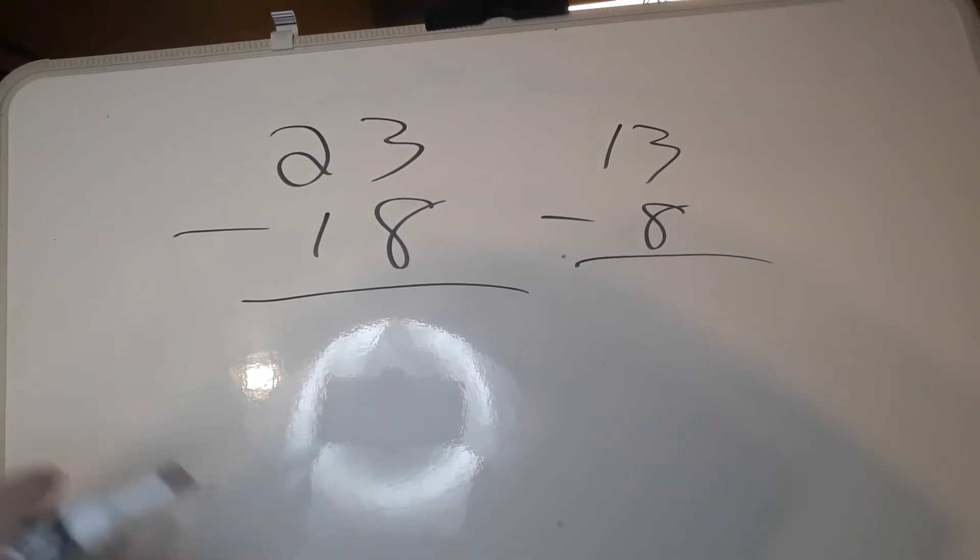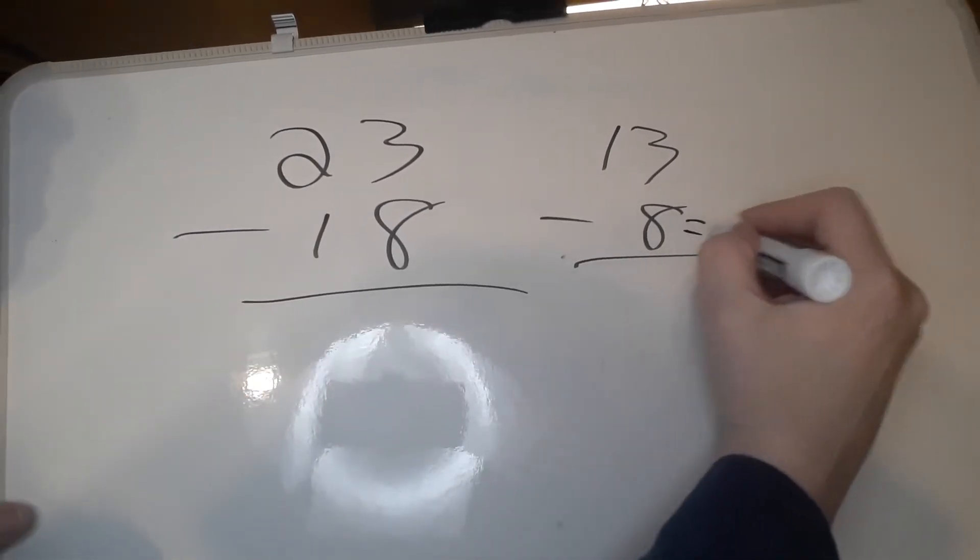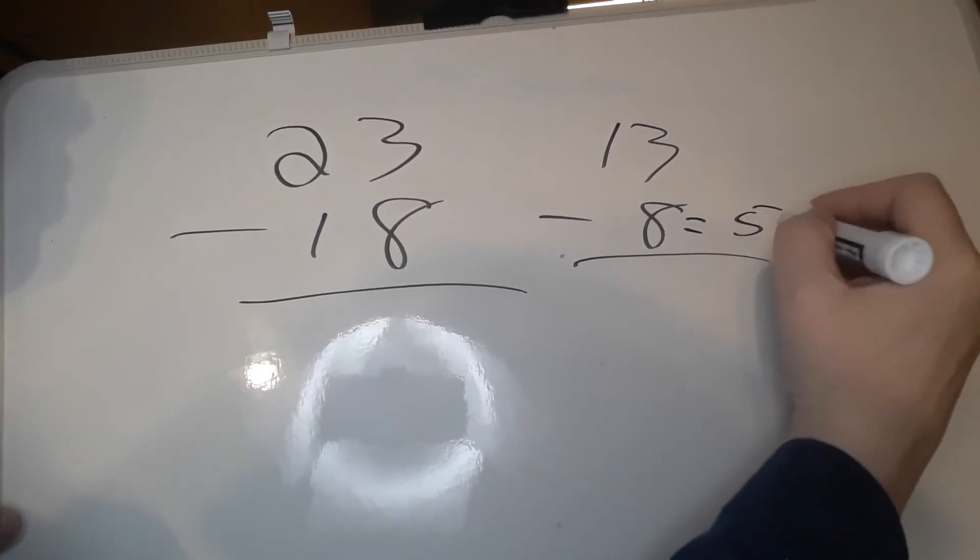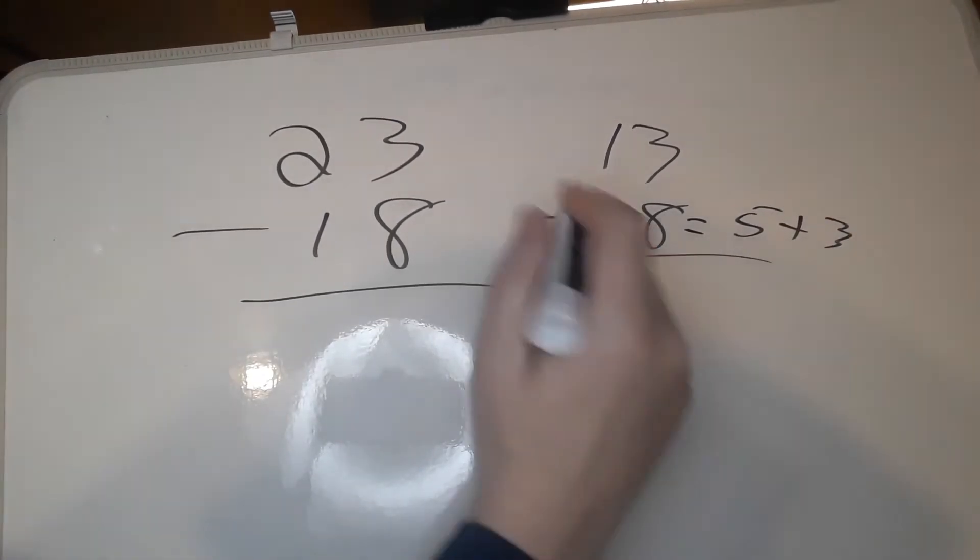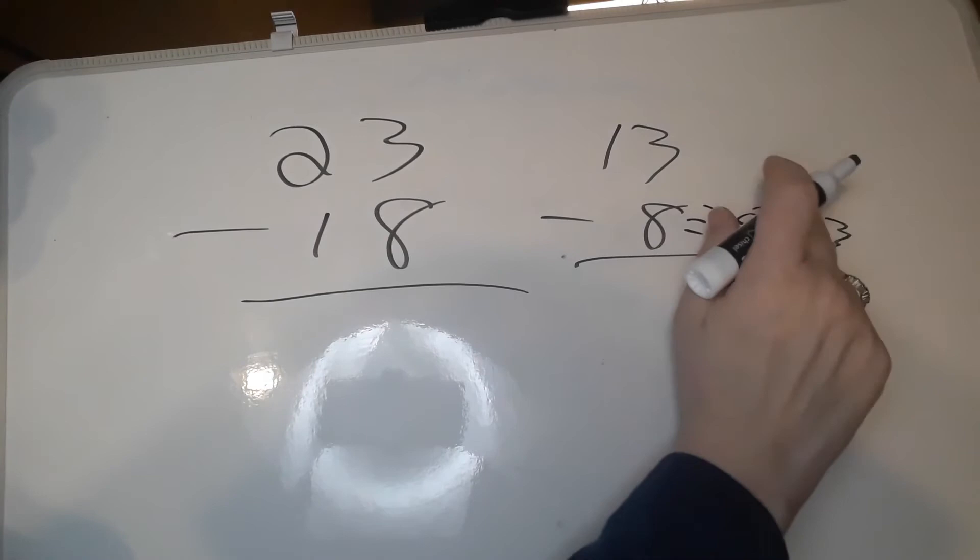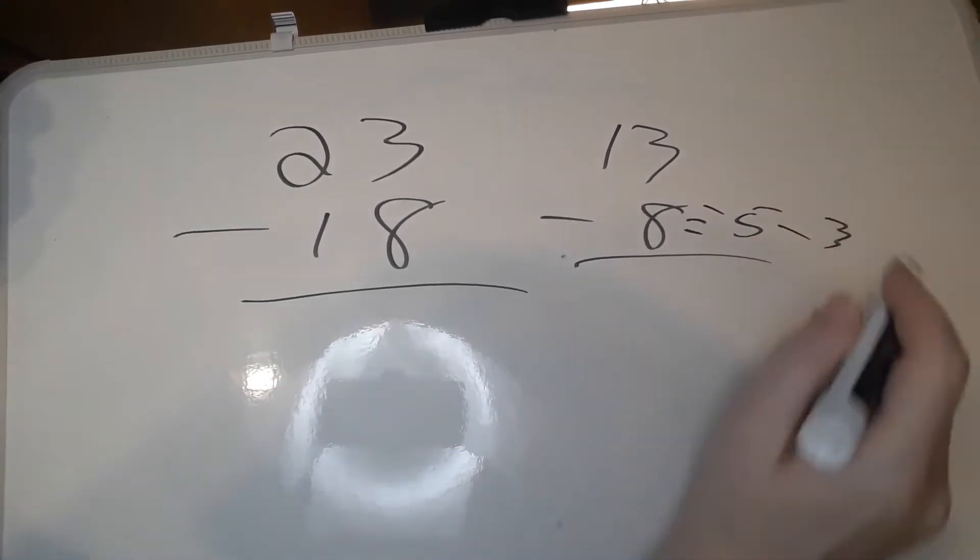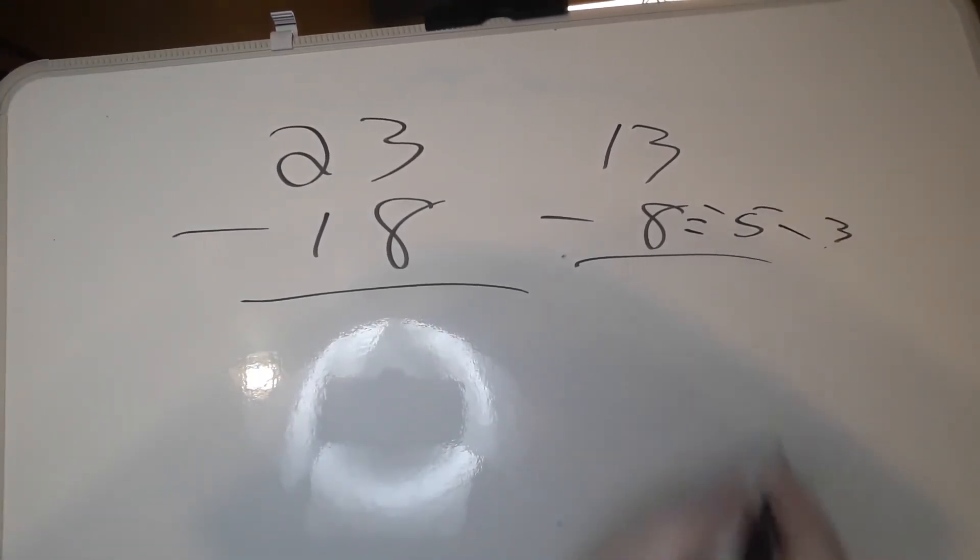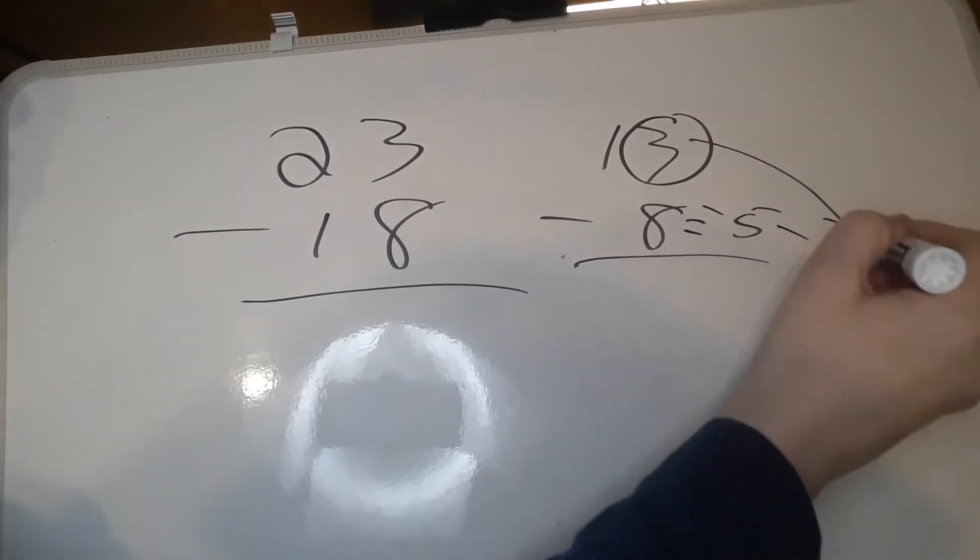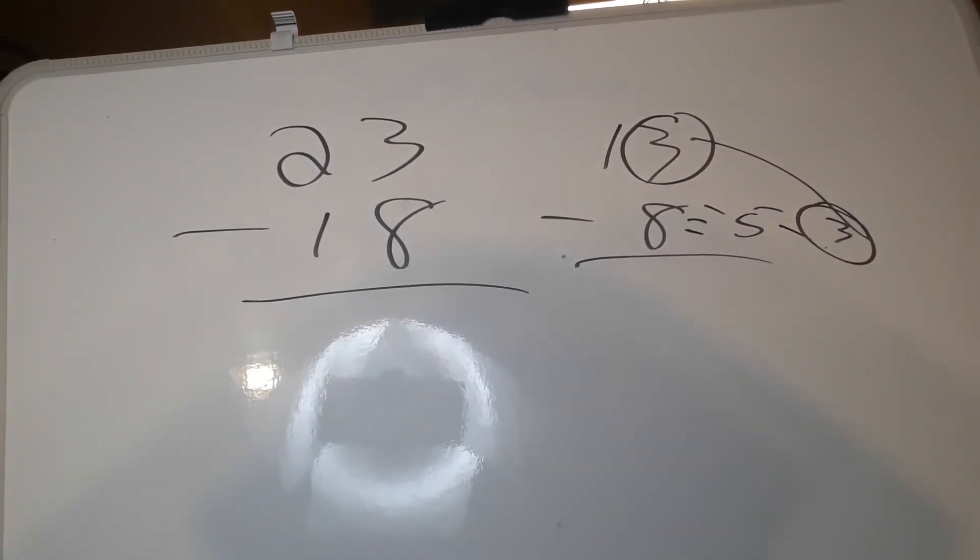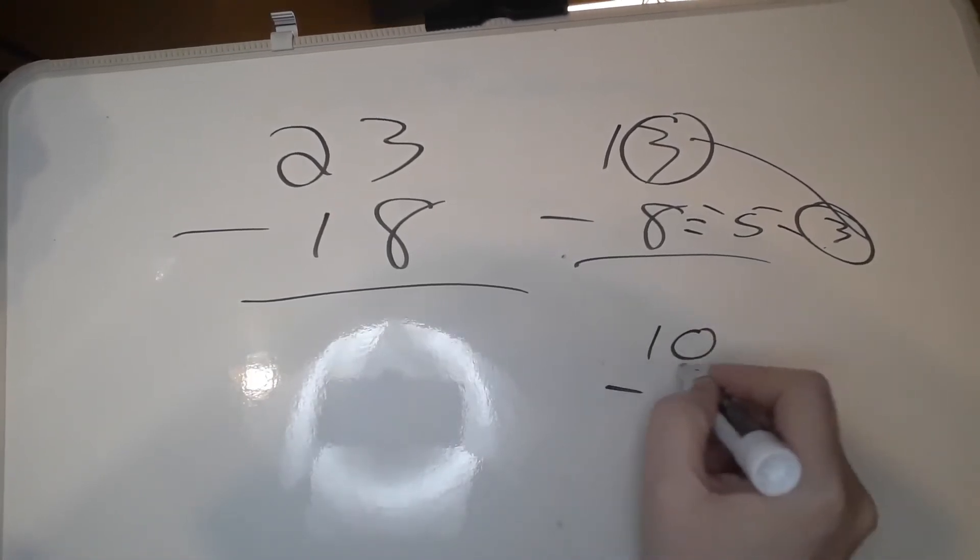If that's not easy enough to do in your head, you can do this trick. Okay, 8 is 5 plus 3, so because 8 is negative we have a minus 5 and minus 3. That's a 3. So now the 13 here, the 3 there cancels the 3 there. So now we have 10 minus 5.